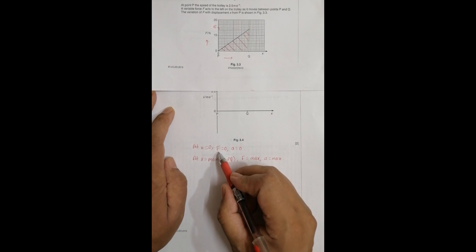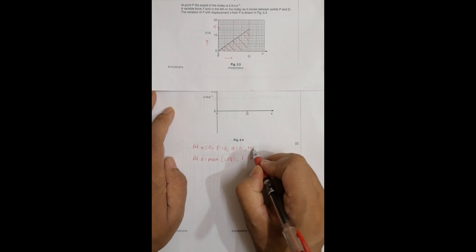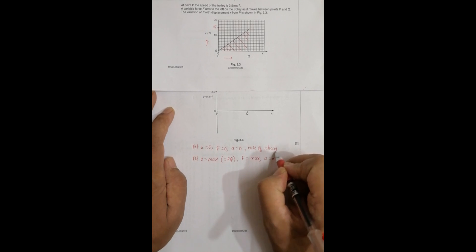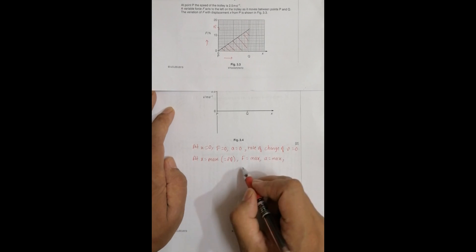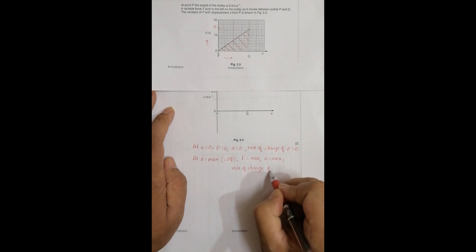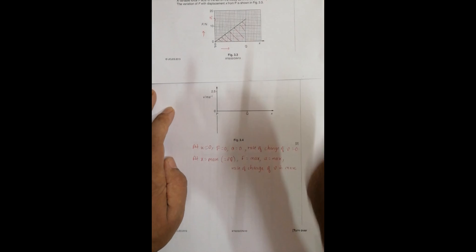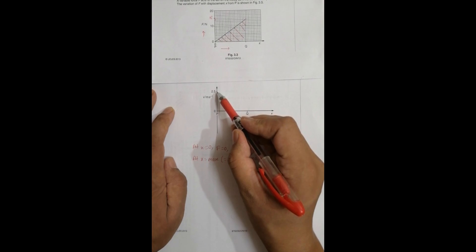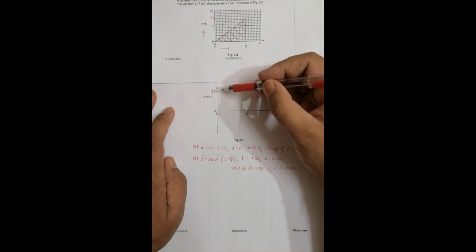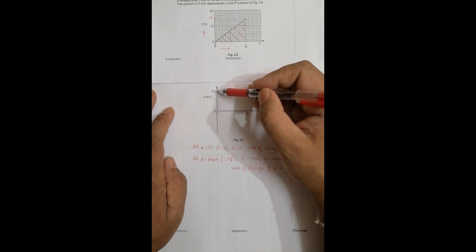So what must happen is initially F is 0, a is 0. A equals 0 means that rate of change of v equals 0. And here a is max means rate of change of v is max. So it means that initially we have got v equal to max and its rate of change is zero, meaning horizontal. That rate gradually goes on increasing. Here at this point, the rate of change should be maximum.